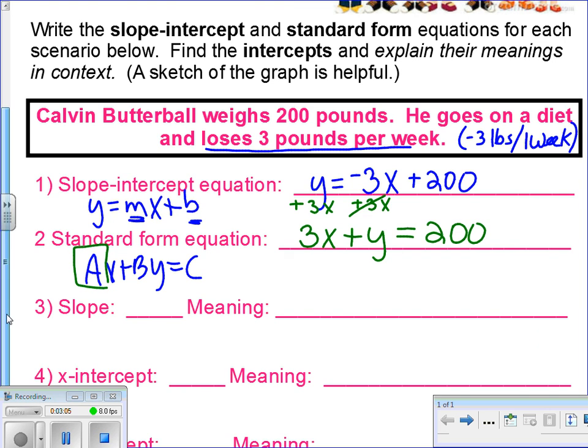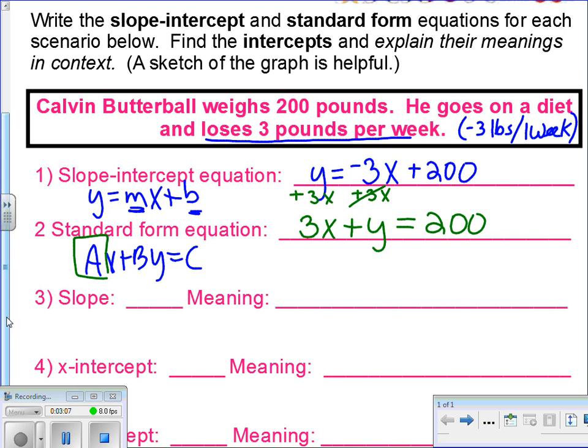Number three, let's write down the slope. We've already identified the slope to be negative 3 or negative 3 over 1, thinking about our rise over our run. And the meaning would be exactly what we talked about right here. It means that Calvin here is losing 3 pounds per week. When you describe the slope in context, it always needs to be a comparison. We're doing this over what period of time? We're losing 3 pounds for every one week.